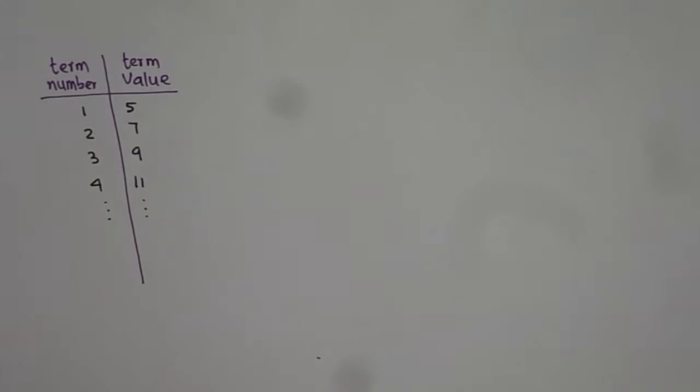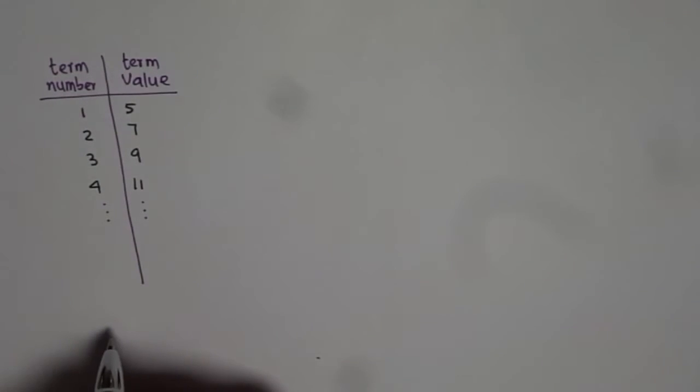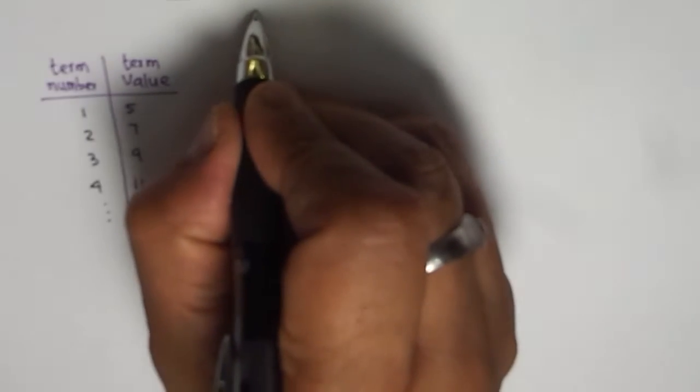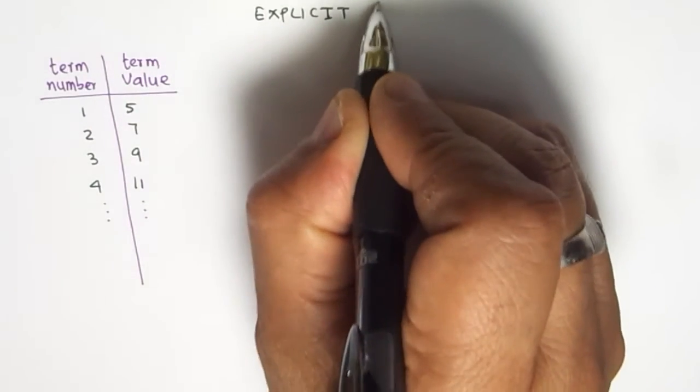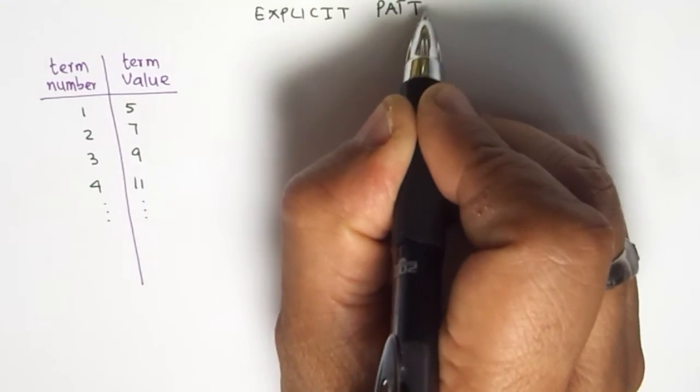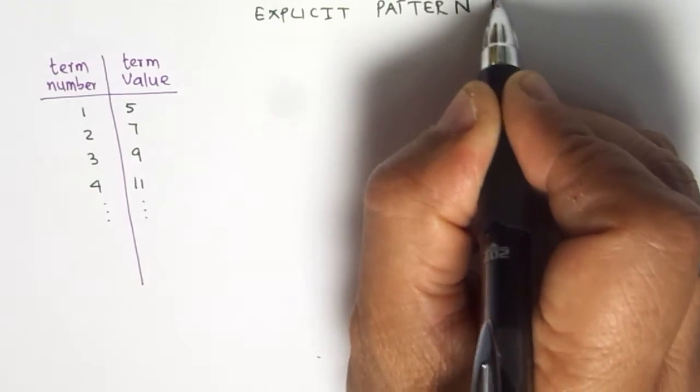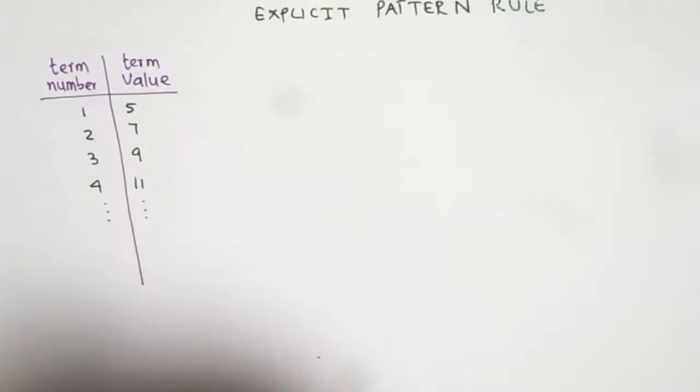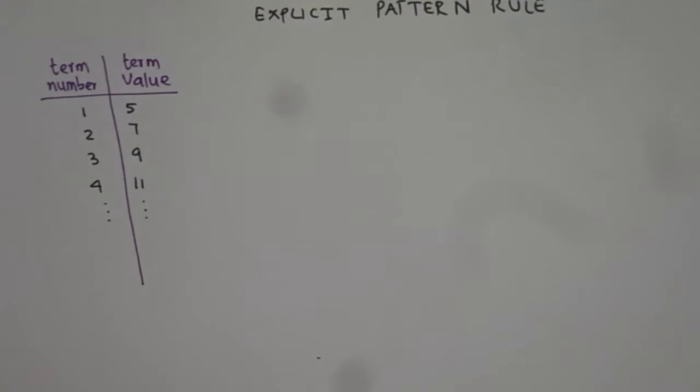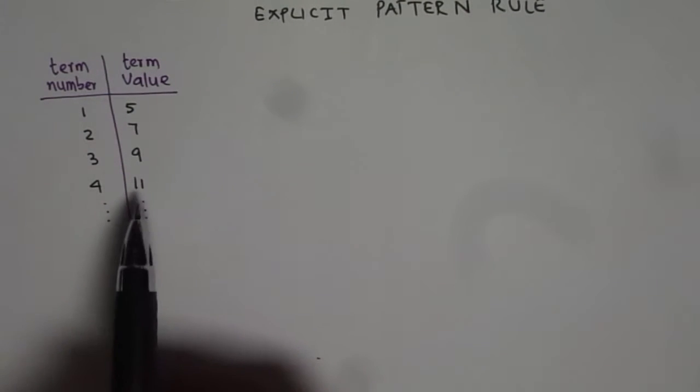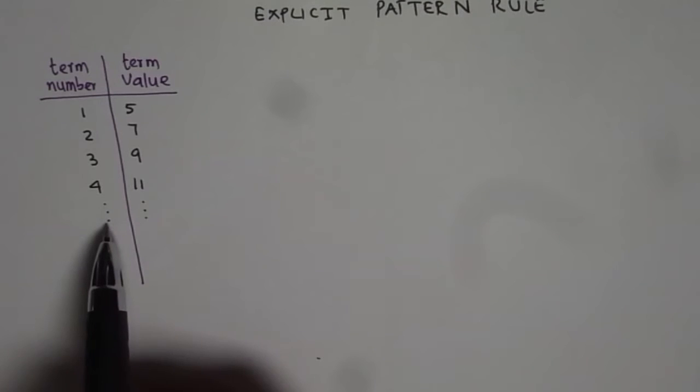The question here is you need to find explicit pattern rule. So we need to find explicit pattern rule for the given patterns. Now explicit means that you have to relate term value with the term number directly.